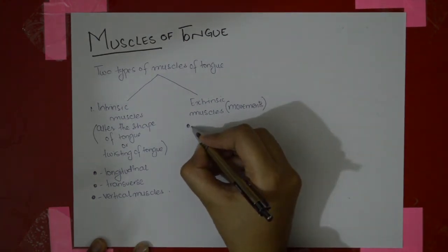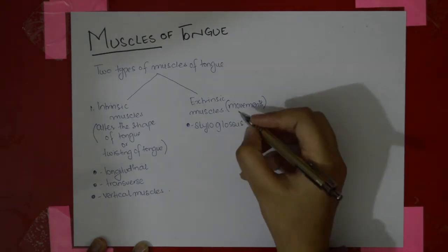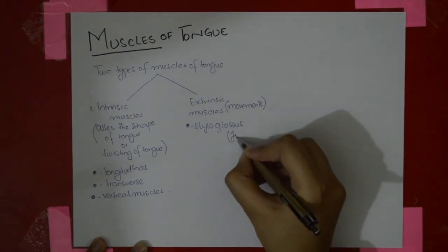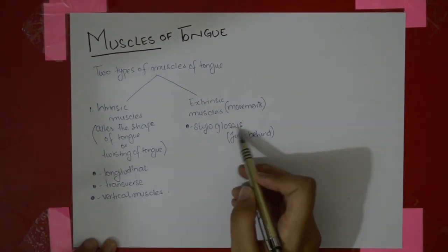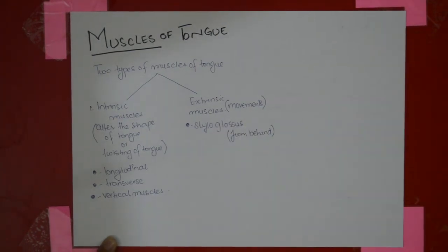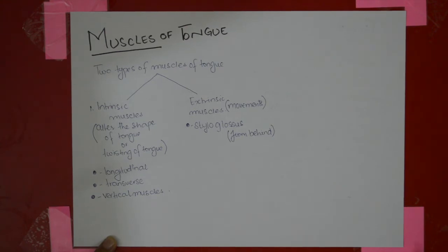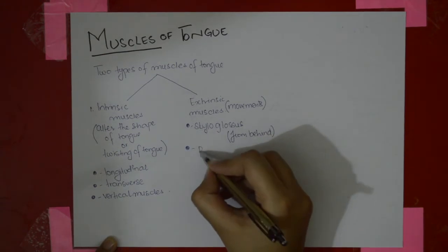The first extrinsic muscle is the styloglossus muscle. It comes from behind. 'Glossus' refers to the tongue, and 'stylo' refers to the styloid process. So its origin is from the styloid process and its insertion is on the side of the tongue — styloid process to the side of the tongue.